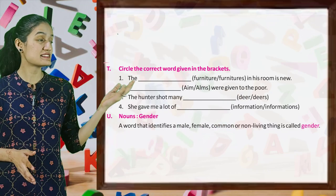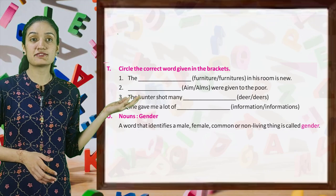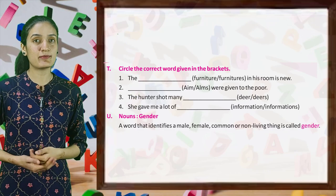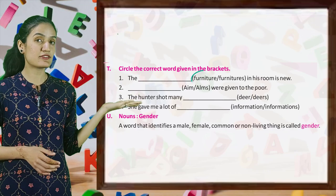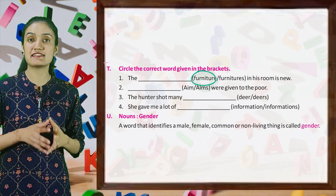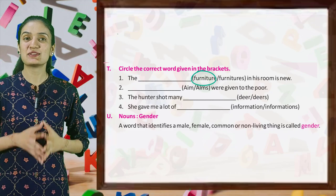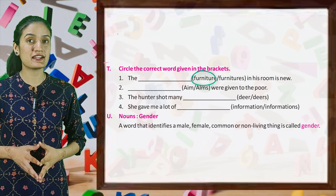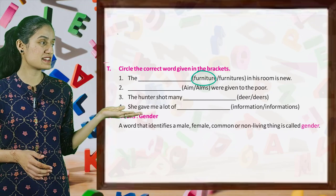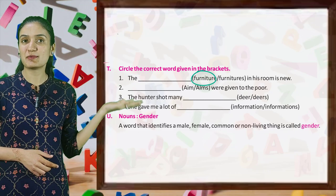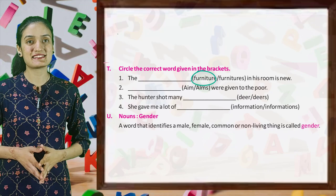Now kids, circle the correct word given in the bracket. The furniture in his room is new. In the same way, you have to identify the correct words among the brackets.